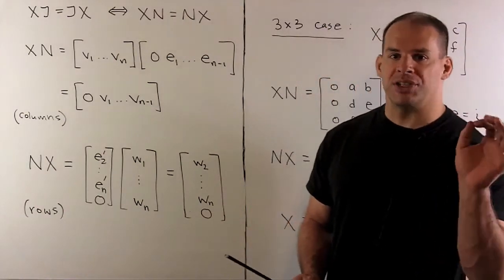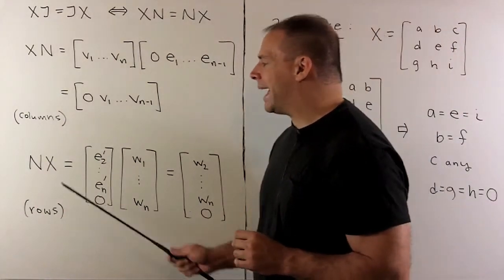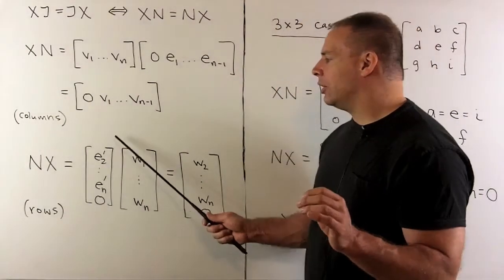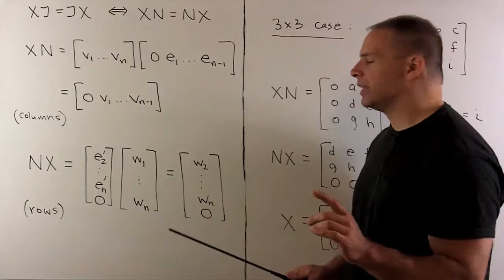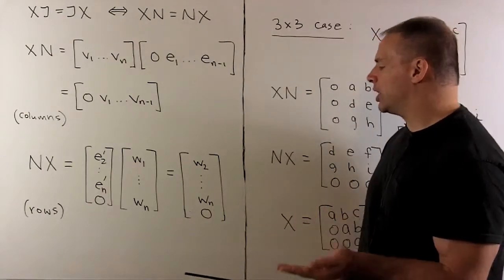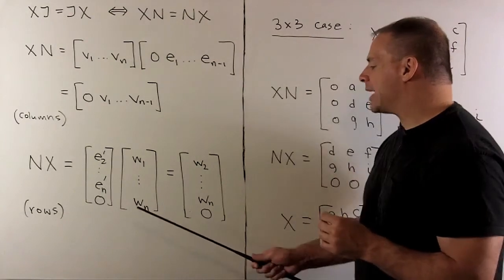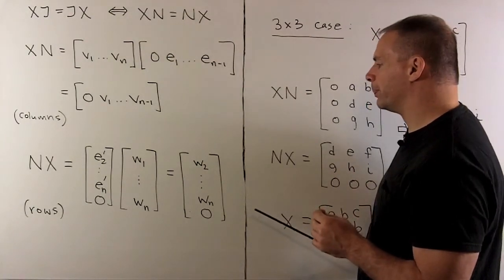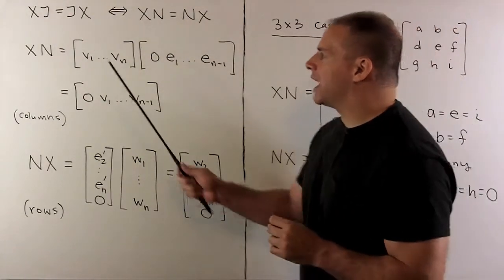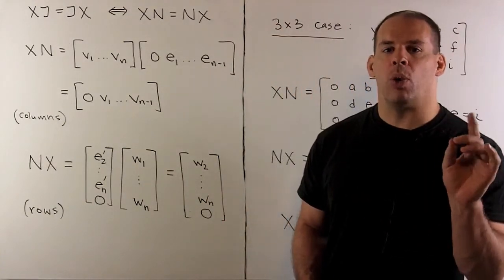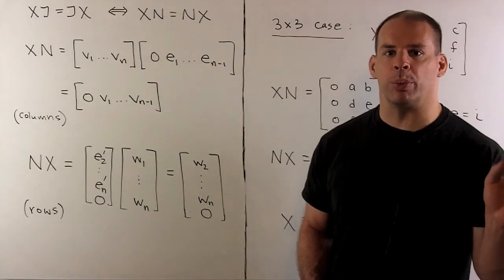Now, in a similar manner, if I multiply N times X, we think of things in terms of the rows. And then, when you track out what's happening, same idea. We're going to shift everything up by one, and then we're going to fill in the last row with zeros. If we set these two equal to each other, if we unspool all the equations, we'll wind up getting X as on the previous board.